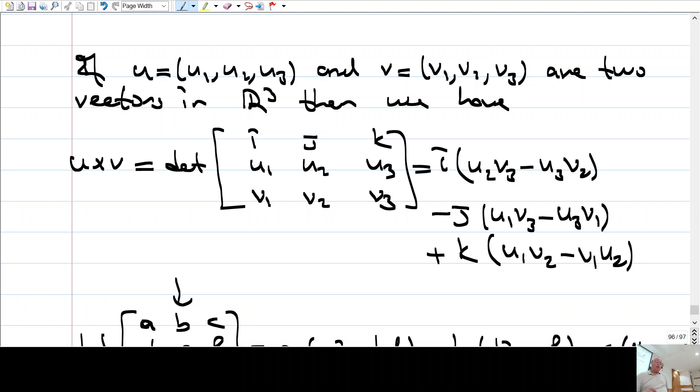So, you see that cross product of these two vectors is just equal to this determinant. Okay. So, there is such a relation between determinants and cross product.